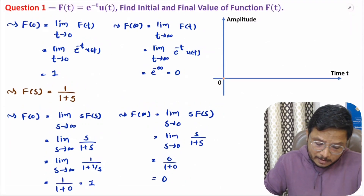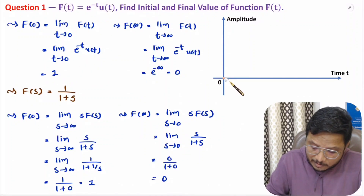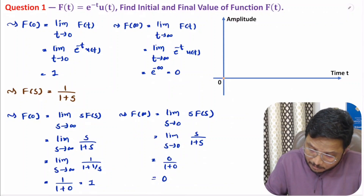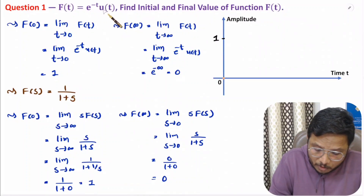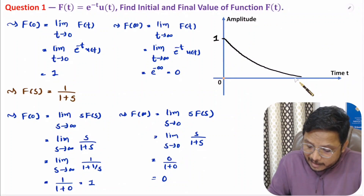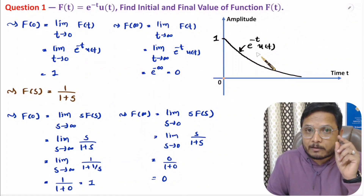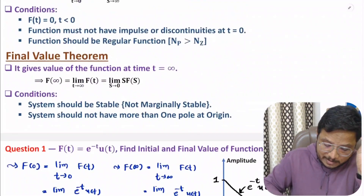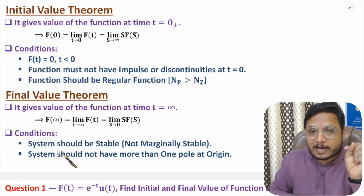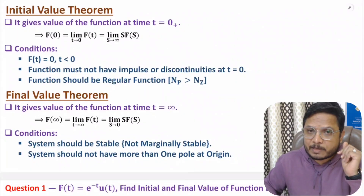Let me plot this. For the function e^(−t)·u(t), the initial value is 1 at t equals 0. As time progresses, the value decays exponentially toward 0. This function follows all the stated conditions, which is why we can identify both initial and final values. But there can be issues with the conditions, so let me solve the second problem.